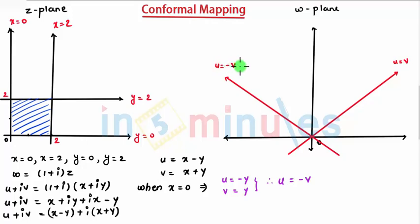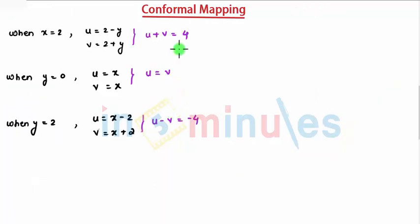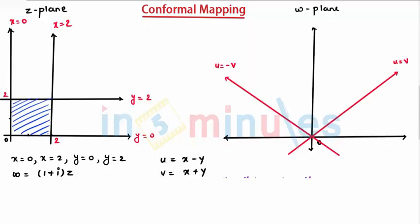Next, I have two equations: u plus v equal to 4. This will pass through, when u is 0, v will be 4, and when v is 0, u will be 4. So one point is 0 comma 4 and one is 4 comma 0. These are the two points it will pass through.